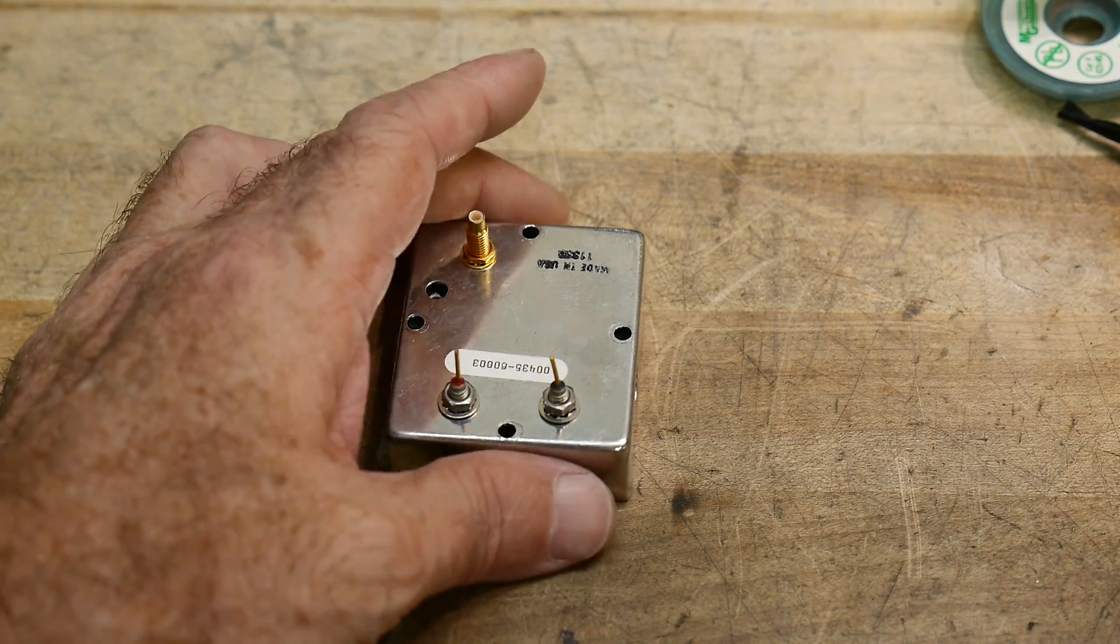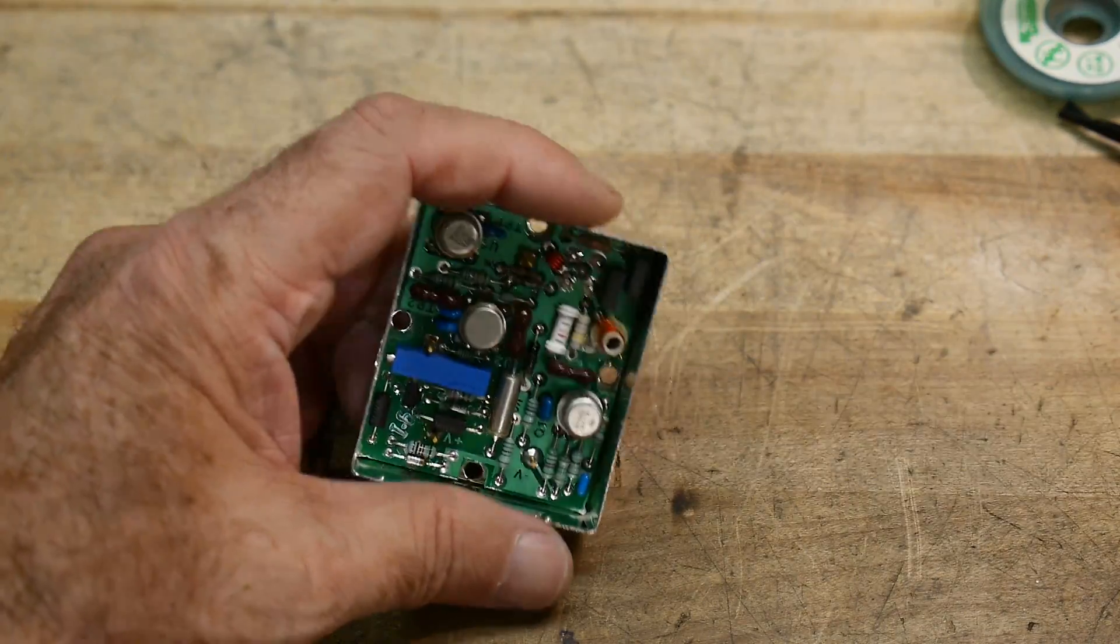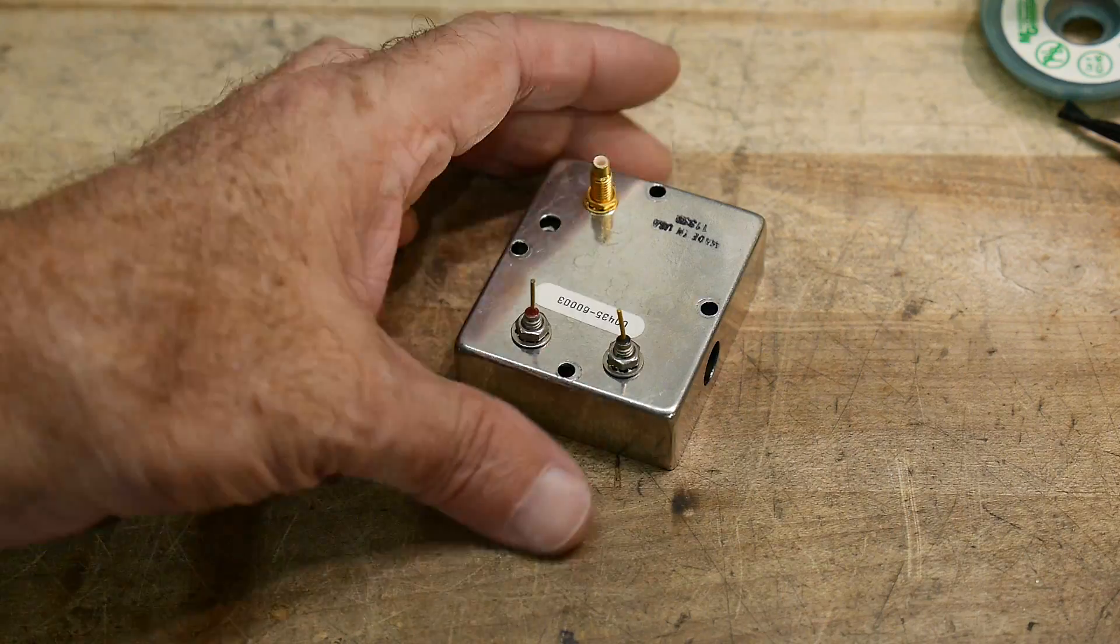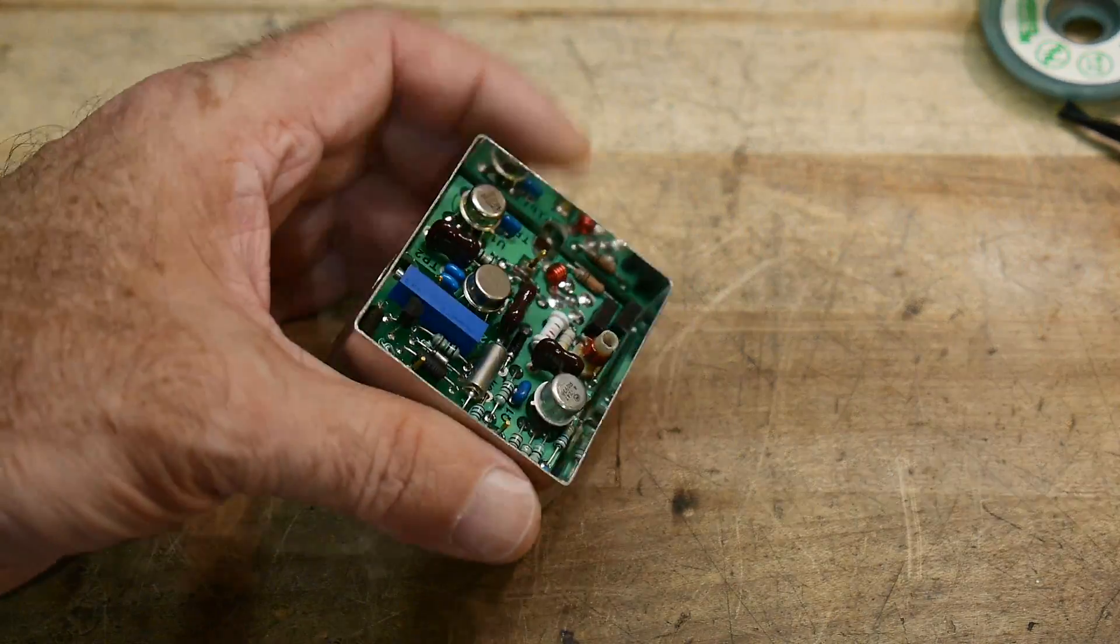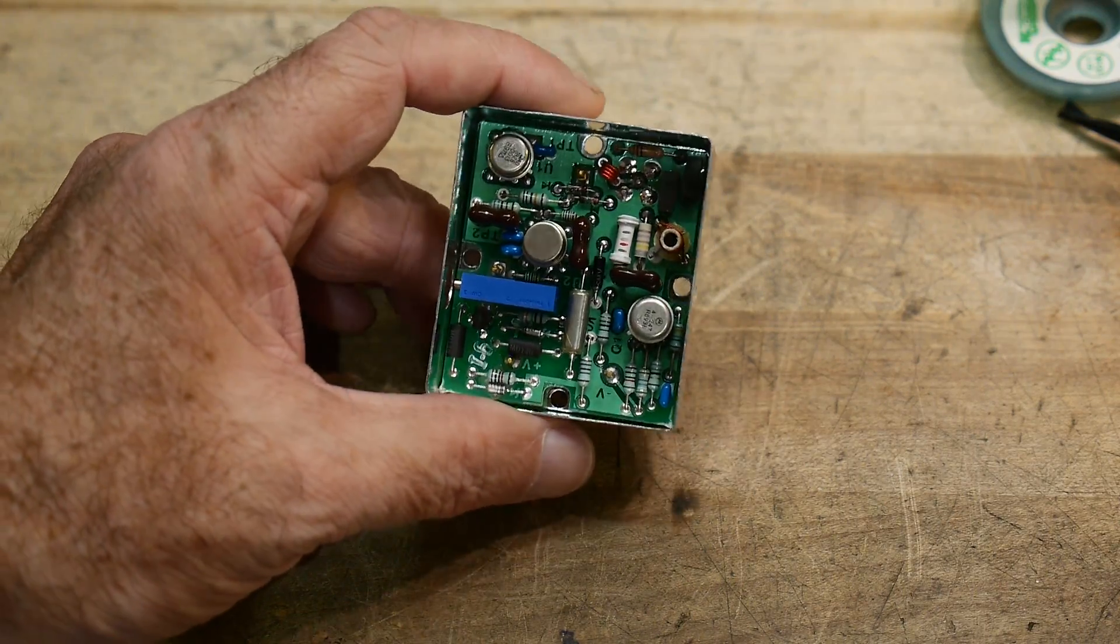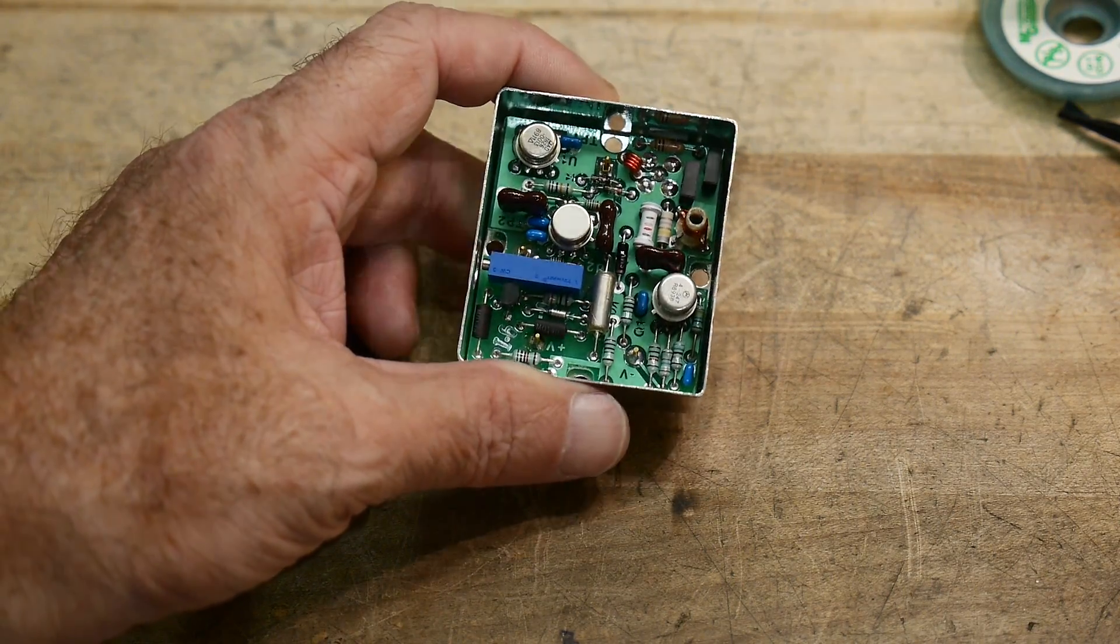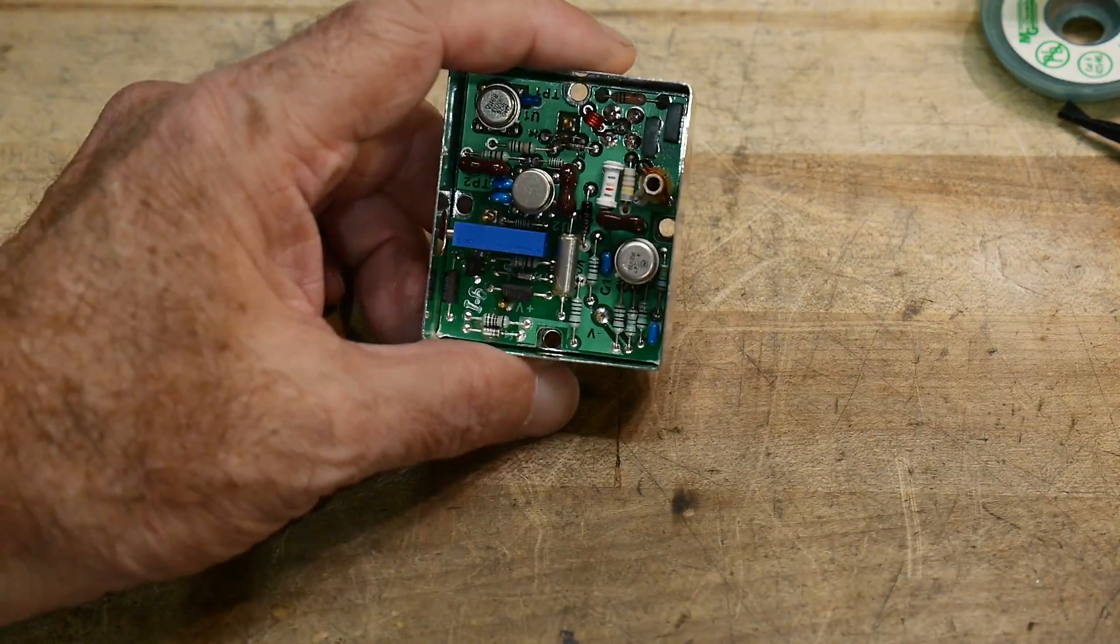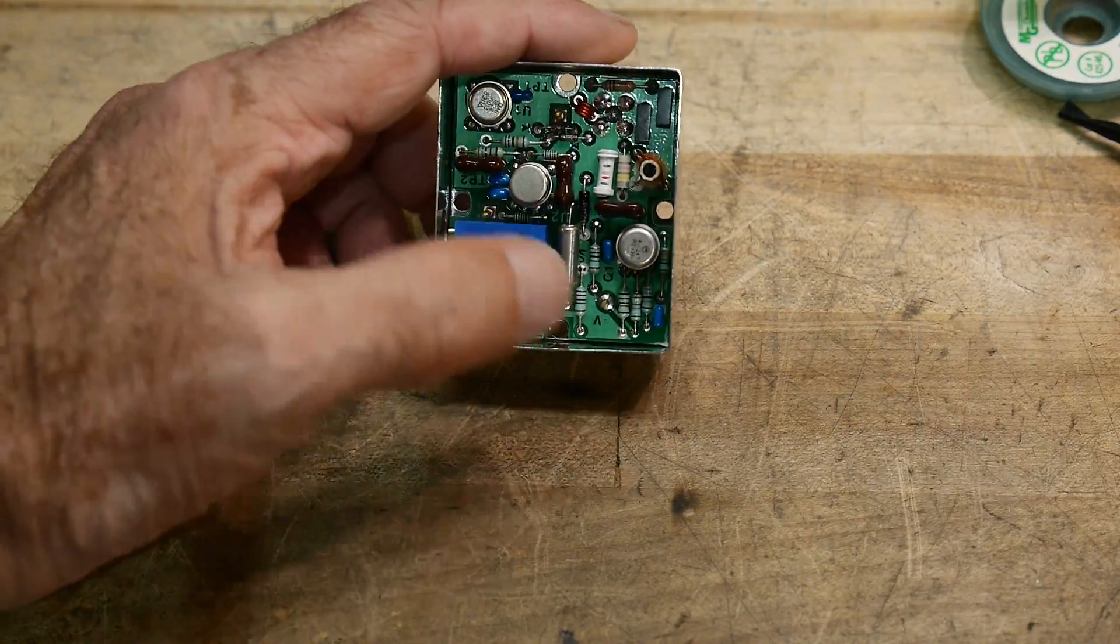And so this is all self-contained, plus or minus 15 volts, and out comes 50 megahertz at zero dBm. There's a 10-turn potentiometer in here to adjust the power output level, and it's referenced to something inside. Depending on how fancy power meter you have, it's referenced to different things.